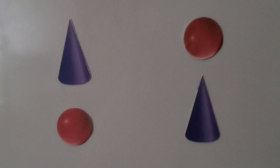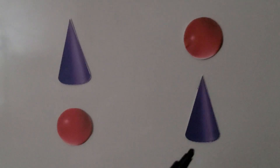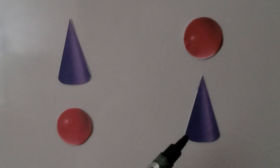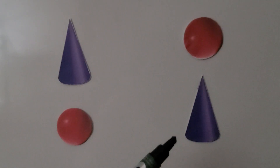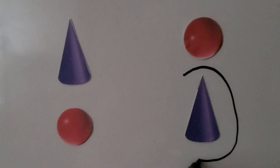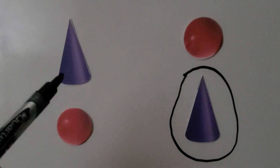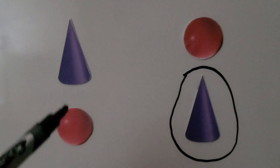Here we have cones and spheres. We need to circle the cone that is below a sphere. Which cone is below a sphere — is it this cone or this cone? If you said this cone, you're correct. Below means lower than. We need to circle this cone — it is below a sphere. It's not this cone, because this cone is above a sphere.